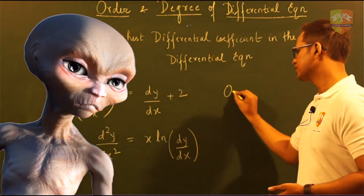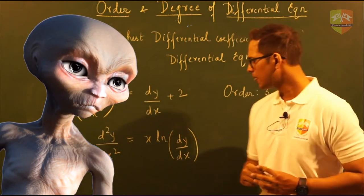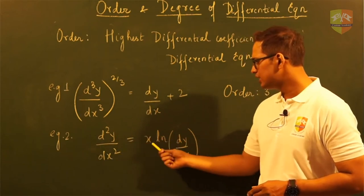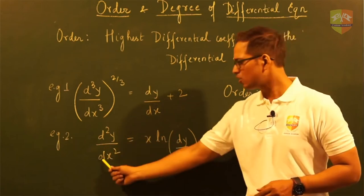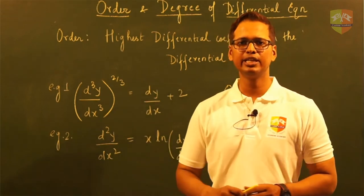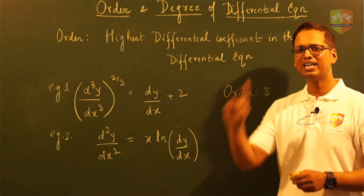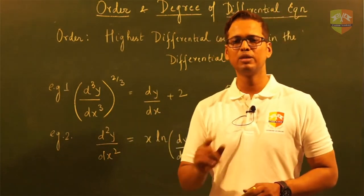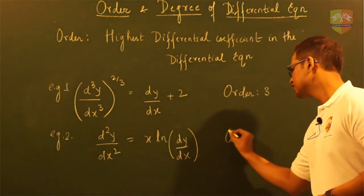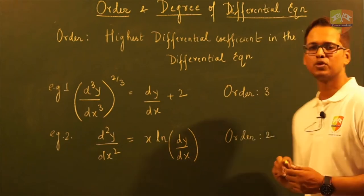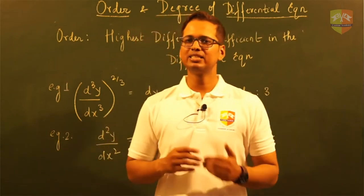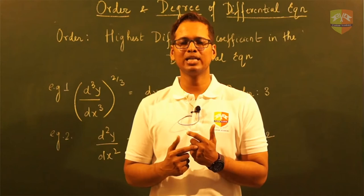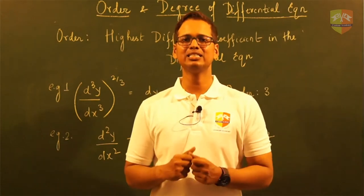The order is the maximum number of times the derivative of y has occurred with respect to x in that equation, so this is an order 3 differential equation. For example 2, we have dy/dx and d²y/dx² = x·ln(dy/dx). Out of these two, d²y/dx² is the highest order since y has been differentiated twice, so the order is 2. When deciding order, pick the term where the derivative of y has occurred the maximum number of times.